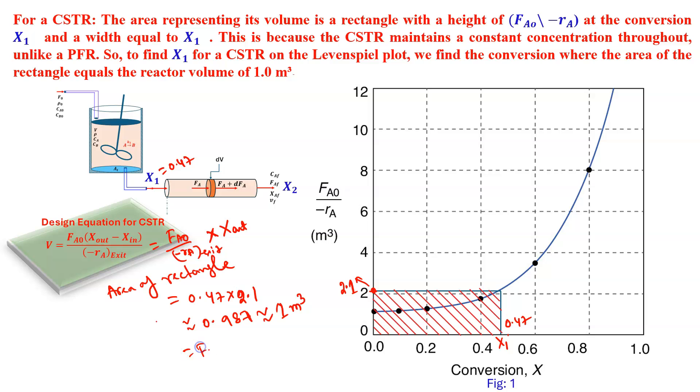This is nearly equal to 1 meter cube. FA0 minus RA is in meter cube and conversion, so that will be 1 meter cube. That 0.47 is the outlet conversion of the CSTR. Now, we have to find out what will be X2.